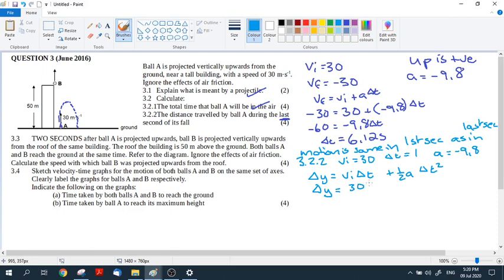So our initial VI was 30, delta T was one. We said up is positive. So this becomes plus a half of negative 9.8 times one squared. And then you end up with 30 minus 4.9, because a half of 9.8 is 4.9. 30 minus 4.9. So delta Y equals 25.1 meters.